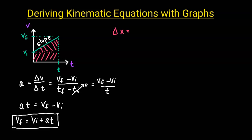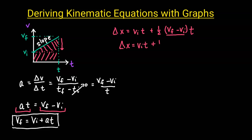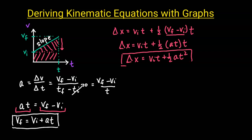The rectangle has base times height: VI times T. The triangle is one-half base times height, where the height is VF minus VI, times T. VF minus VI looks familiar — we can see that VF minus VI equals AT, so we substitute AT in. So we have delta X equals VI·T plus one-half AT², and this is our second kinematic equation.